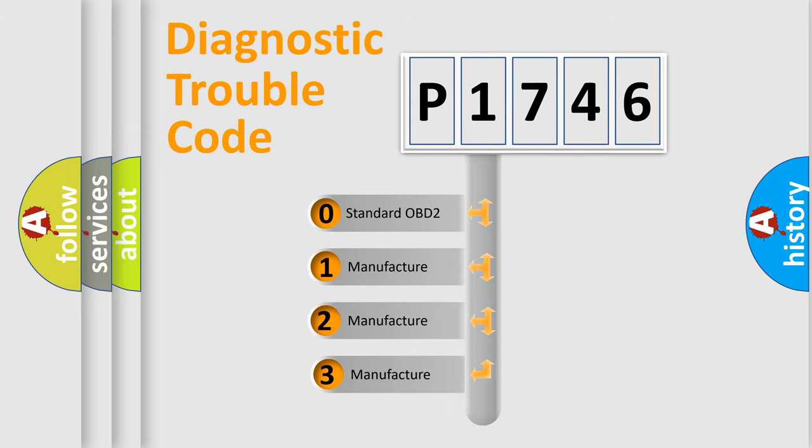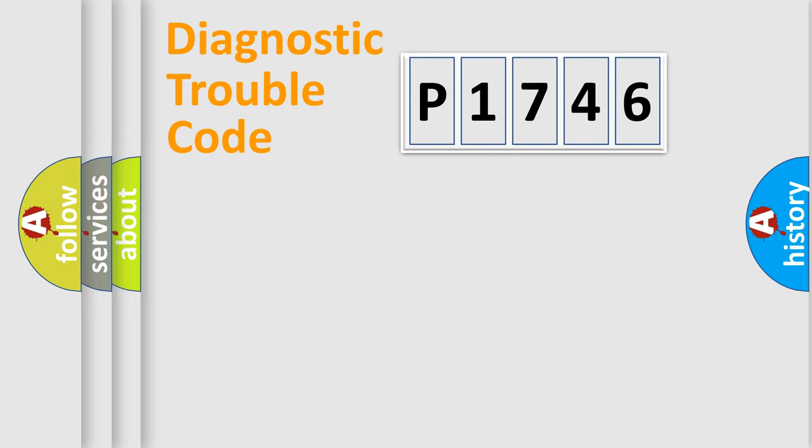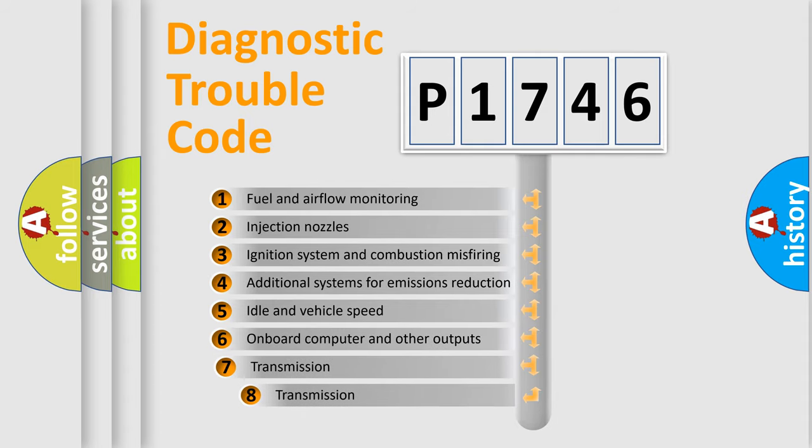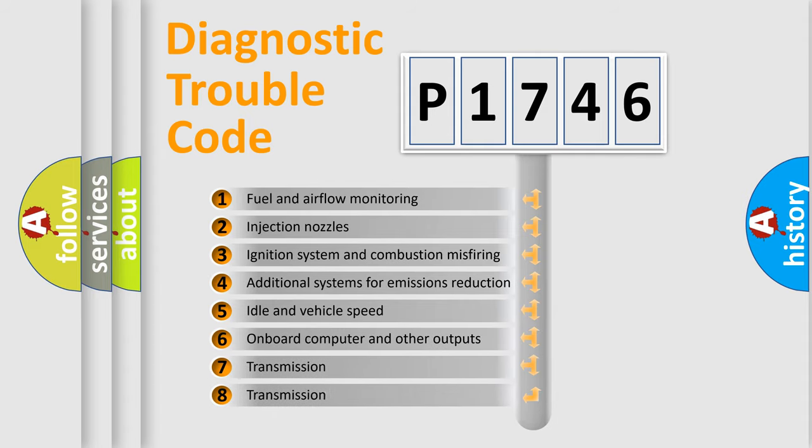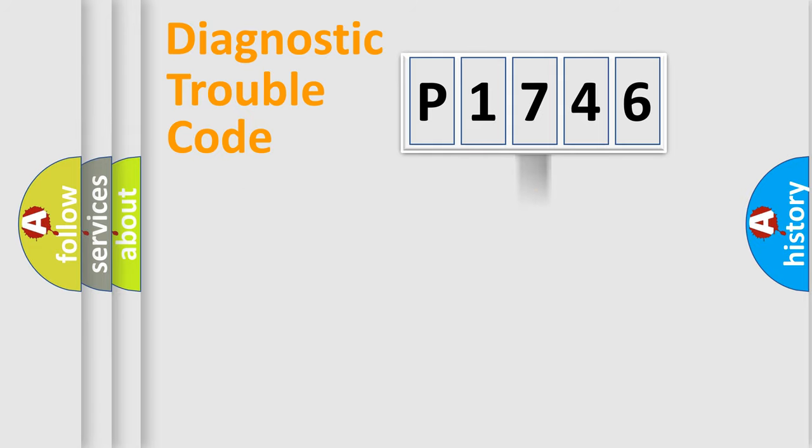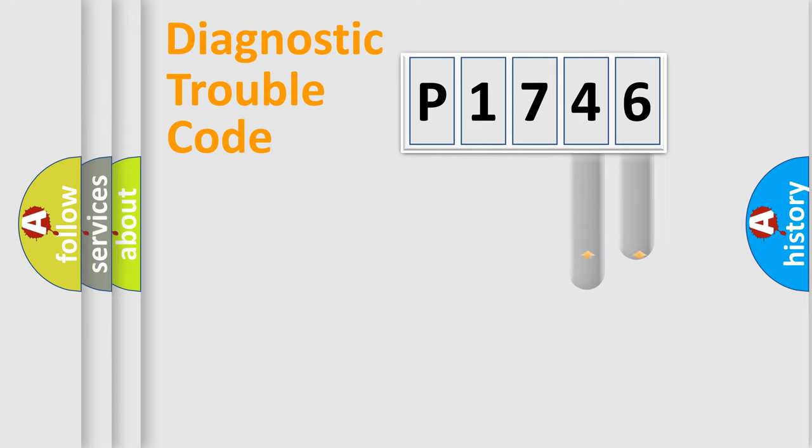If the second character is expressed as zero, it is a standardized error. In the case of numbers 1, 2, or 3, it is a more prestigious expression of the car-specific error. The third character specifies a subset of errors. The distribution shown is valid only for the standardized DTC code. Only the last two characters define the specific fault of the group.